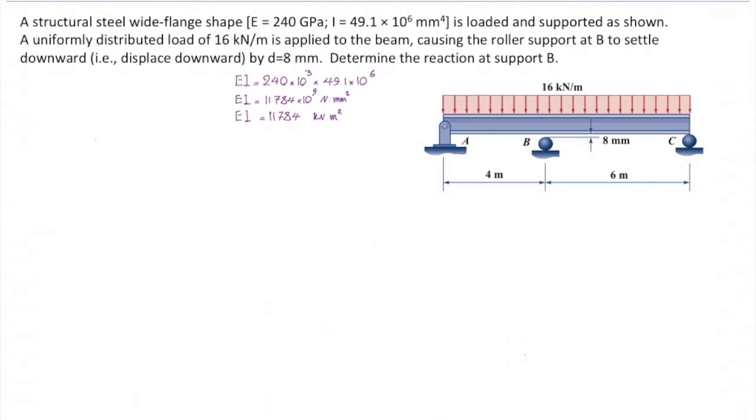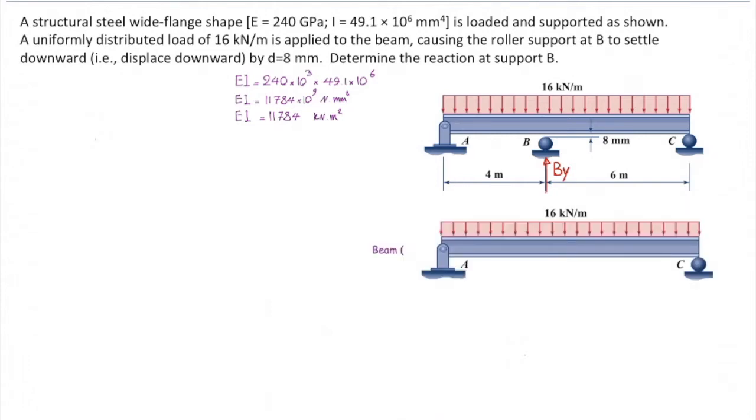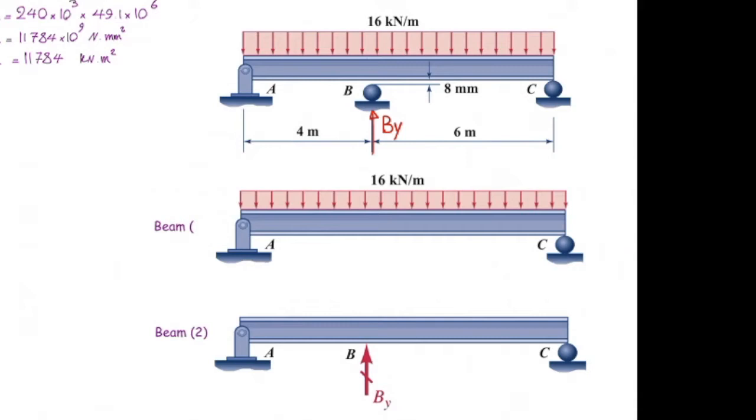For solving the problem we need to release that reaction at B and replace it with an unknown reaction force which is BY in this case. Then we need to determine how much is the deflection of this beam at the released point at point B. We consider two beams here. The first beam is the beam subjected to the distributed load and the second beam is the beam subjected to that reaction force or BY.